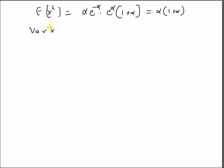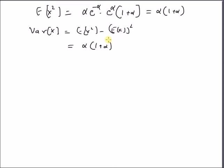The variance of X equals E[X²] minus (E[X])². We have alpha*(1 + alpha), and since the expectation of a Poisson random variable is alpha, we subtract alpha², which gives alpha. Therefore, the variance of a Poisson random variable is equal to the parameter alpha. Thanks for watching.